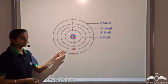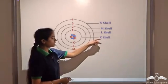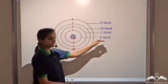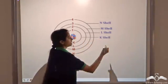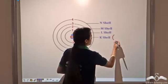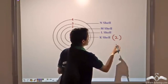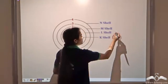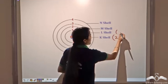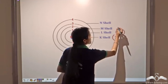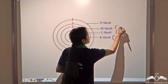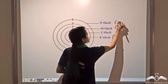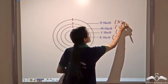Remember the names given to these shells. The first shell is known as the K shell and can have a maximum of 2 electrons. The second shell, known as the L shell, can have a maximum of 8 electrons. The M shell can have 18, the N shell 32, and so on.